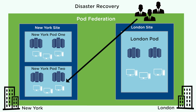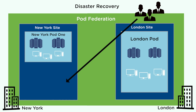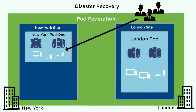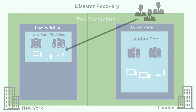Sites can also be a useful part of a disaster recovery solution. For example, if a site contains two pods and one of the pods becomes unavailable, users can receive desktops from the other available pod. In part two of this video series, we'll explain how to entitle users to desktops and applications in the pod federation. For more information about the CloudPod architecture feature, visit docs.vmware.com.